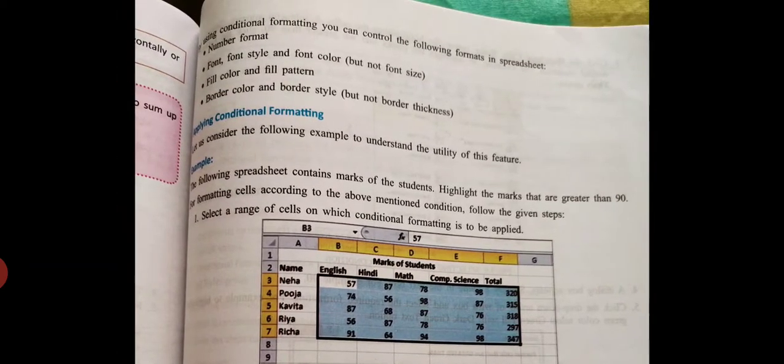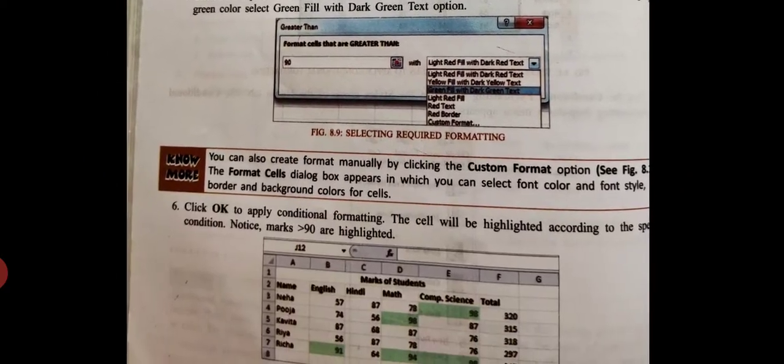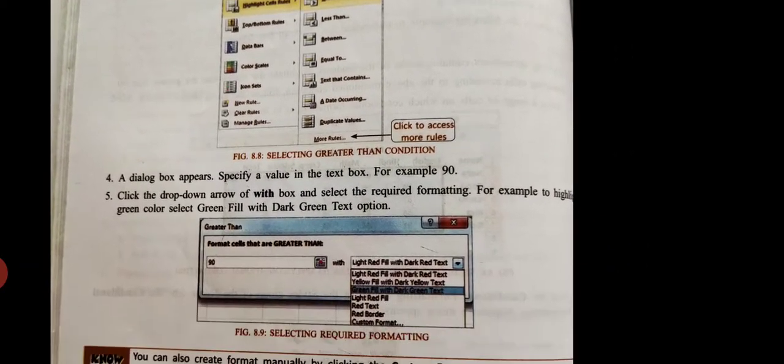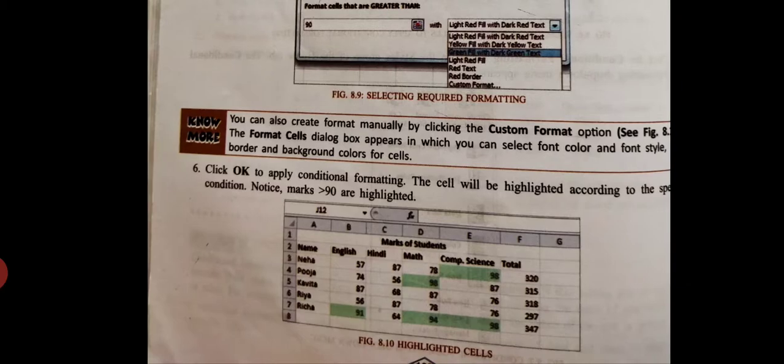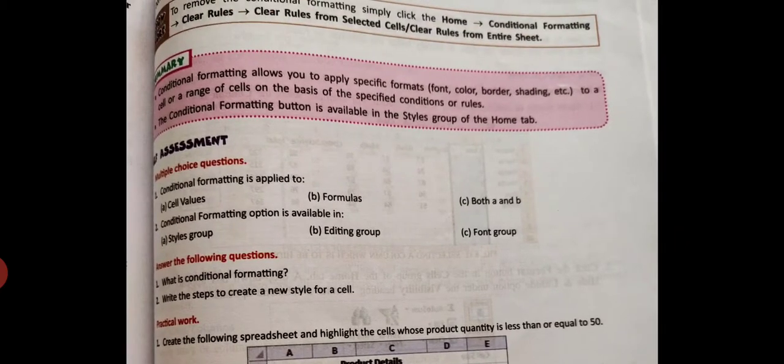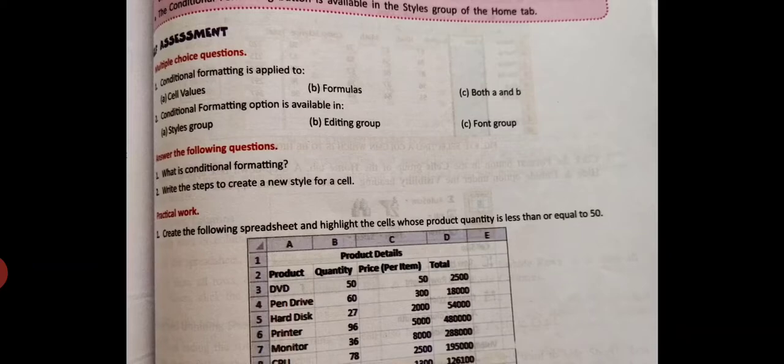Here are the steps for conditional formatting. The number format, font, fill color, border color, all these things we can apply with conditional formatting. All is given here. I will show you in practical how these things happen. Now MCQ you have to do, both questions you have to do from this.